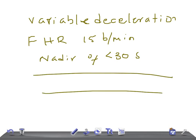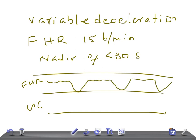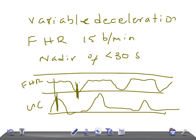Let me draw and explain. The fetal heart rate dips at various times that do not correspond to the uterine contractions — here is bradycardia and here is the contraction at a different time. So it's not at all related to the contraction timing. The cause is vagal stimulation due to umbilical cord compression.